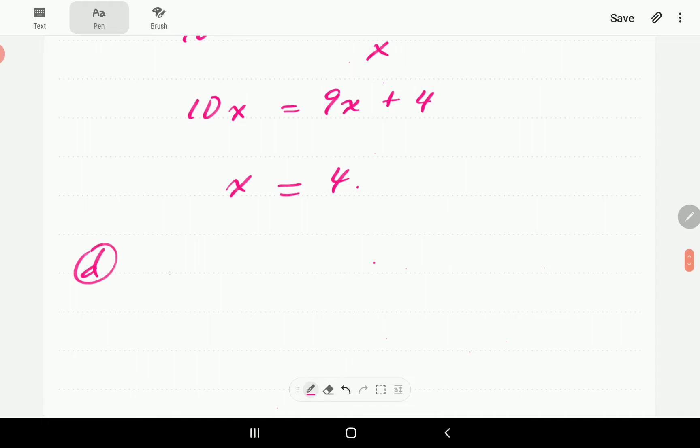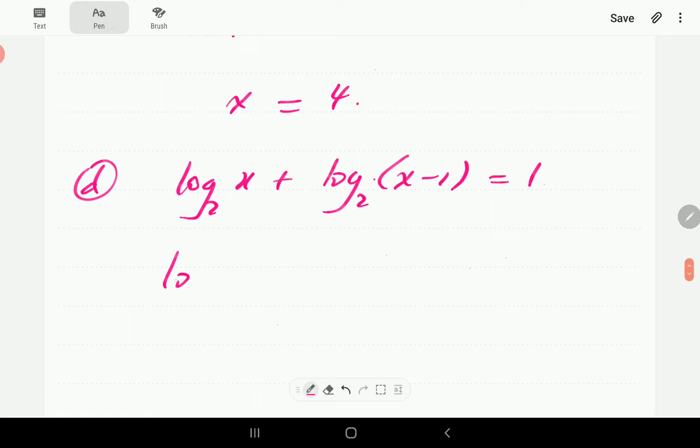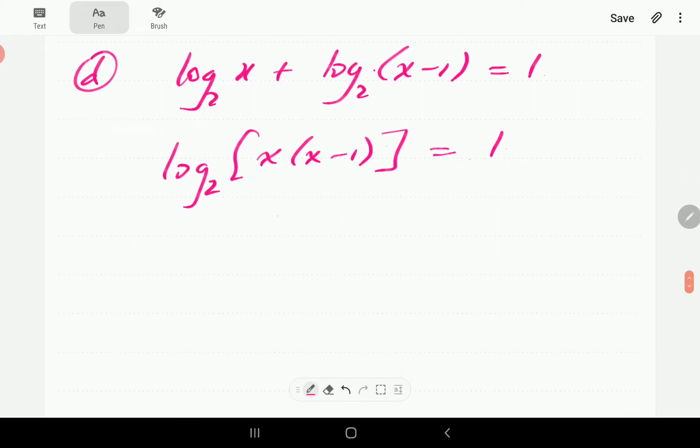And then for d, we've got log of x base 2 plus log of x minus 1 base 2 is equal to 1. So again here, we have got two log terms. So we're going to go ahead and write them as a single log. Since this time is a sum, log of x plus log of x minus 1 is log of x times x minus 1.